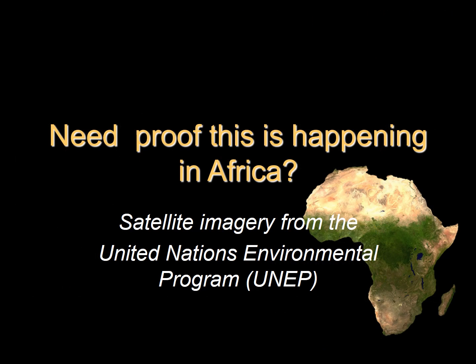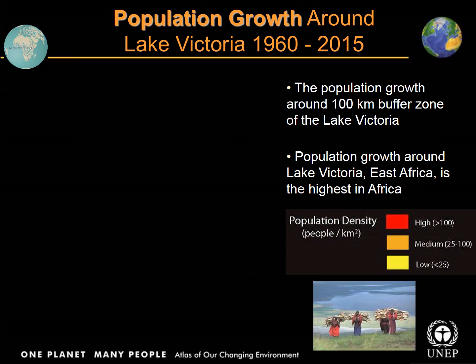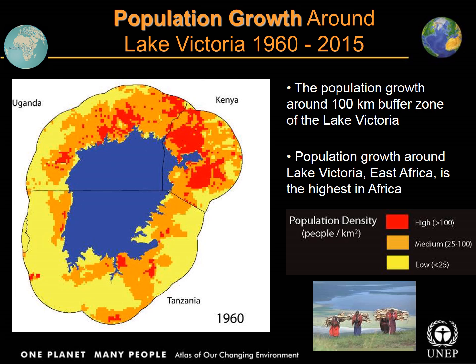You want to see some proof? Let's take a look at some satellite images provided by the United Nations Environmental Program. We'll start by looking at the population growth around Lake Victoria, using a population density map. The color codes indicate population levels: red means more than 100 people per square kilometer, orange indicates medium density between 25 and 100 people per square kilometer, and yellow indicates low population density. In 1960, there isn't a huge amount of population around Lake Victoria, except perhaps on the northwest corner of the lake in Kenya.